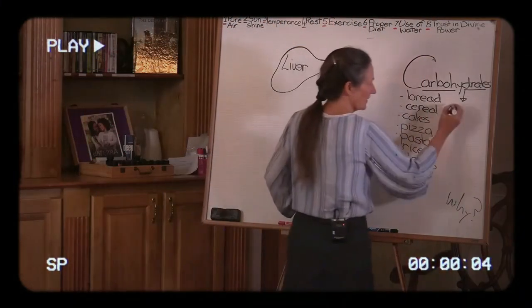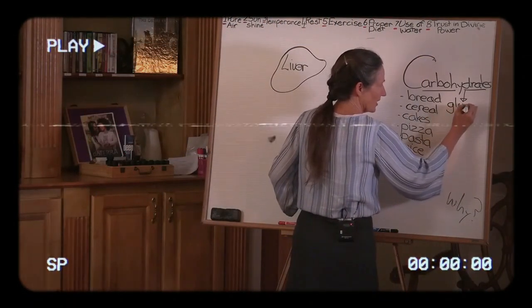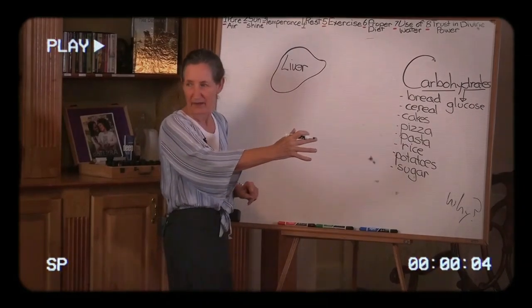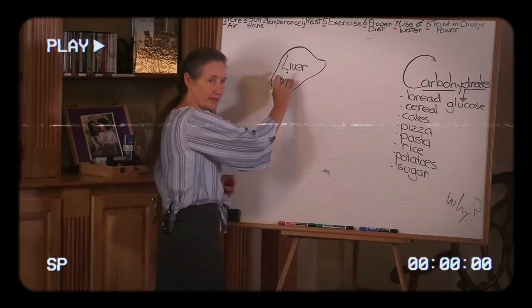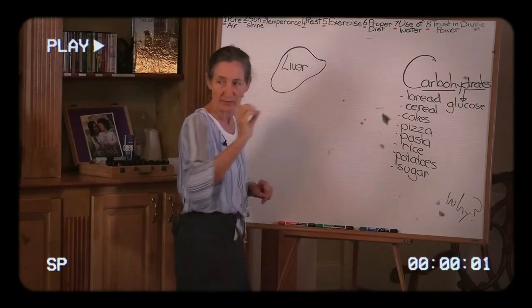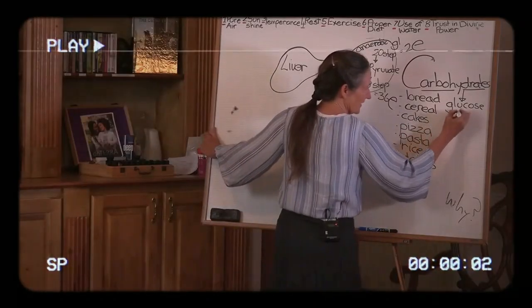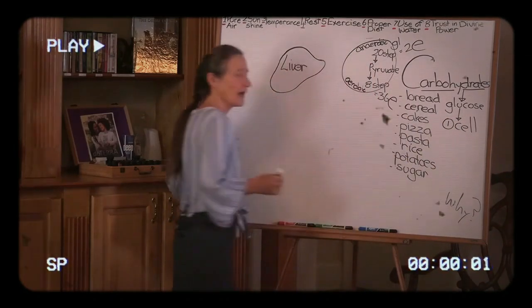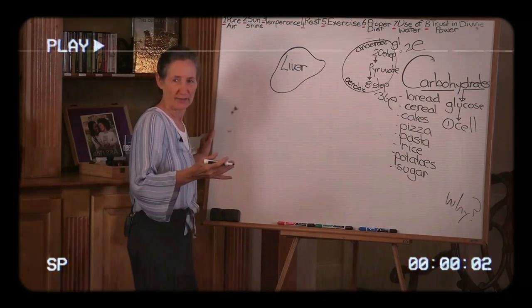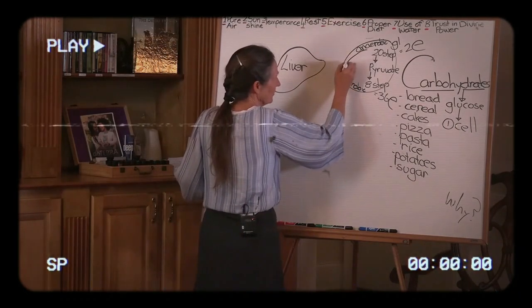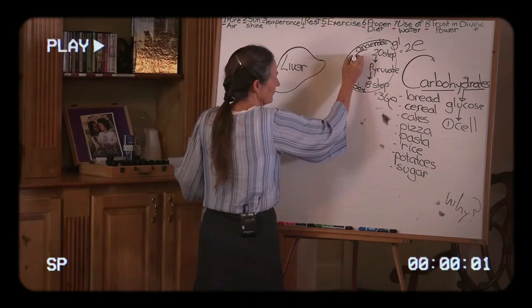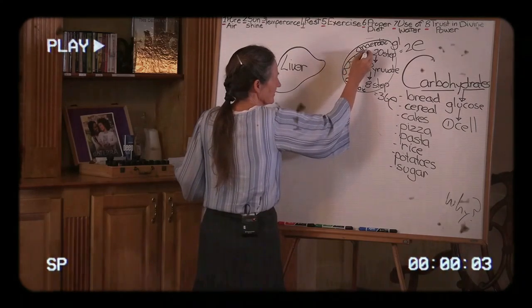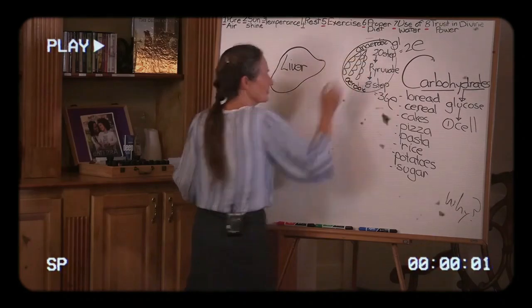All of these foods break down in the gastrointestinal tract to a singular structure called glucose. The glucose goes on the main highway portal vein straight to the project manager, and then the project manager determines where this glucose goes. The first place that the liver will send the glucose is to the cell to be burnt as fuel. But on a high carbohydrate diet, you've got a lot of glucose left over, and so the body stores it in the most amazing quick fuel supply in the body called glycogen.